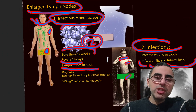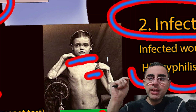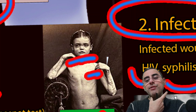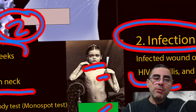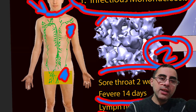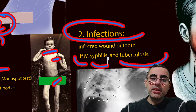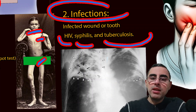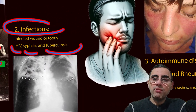Of course, the common cold, flu, and other respiratory tract infections can cause enlargement of neck lymph nodes, but we are talking about systemic enlargement when lymph node enlargement occurs in many places together. That is why we are mentioning tuberculosis, syphilis, and HIV — bacterial and viral infections also cause enlargement of lymph nodes.